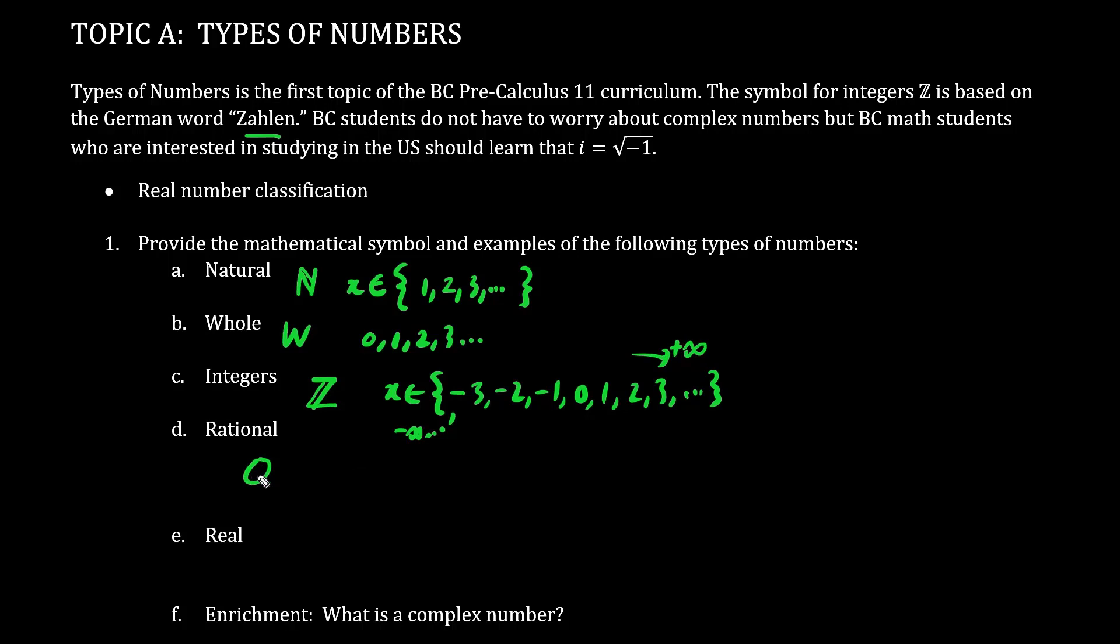Now what about rational numbers? The symbol for rational number is Q for quotient. There are many types of rational numbers. As long as we can get the number into the form P over Q, where P and Q are integers. This here is the definition of rational number. So for example, we have 2/3 is a rational number because we have the numerator as an integer and the denominator also as an integer.